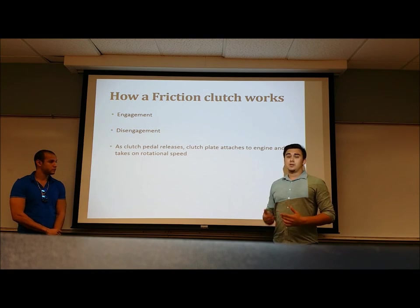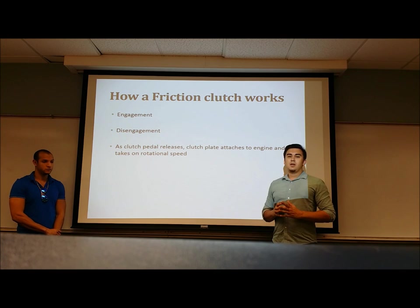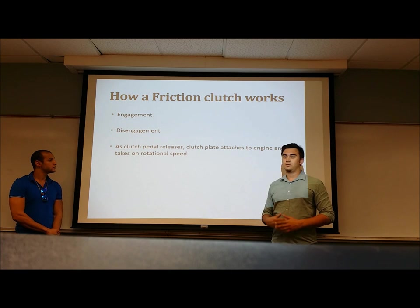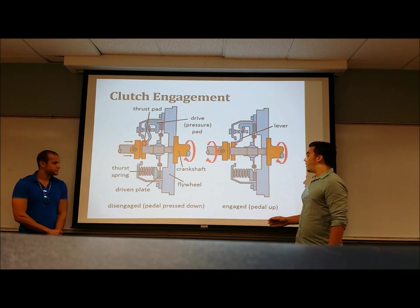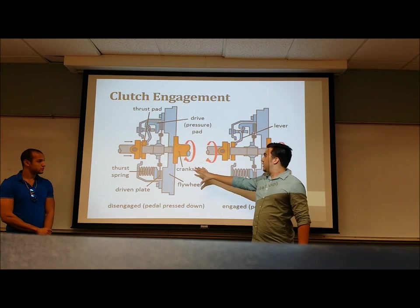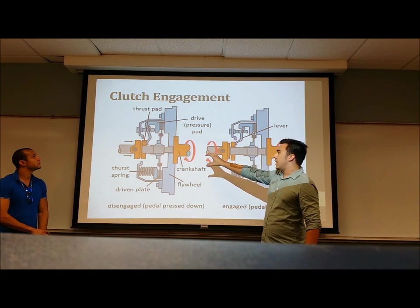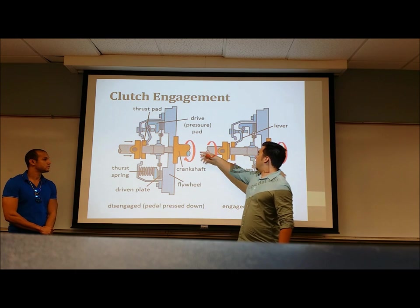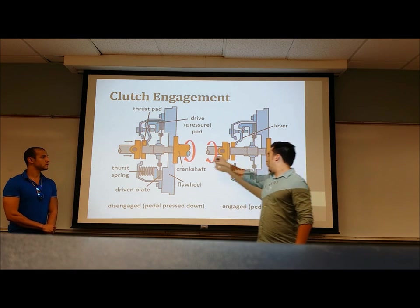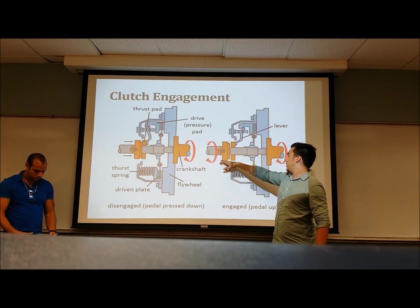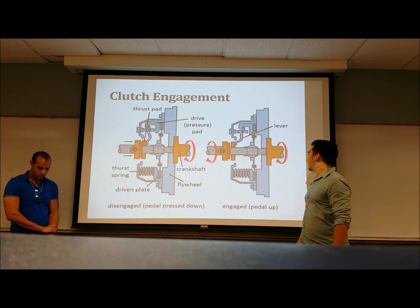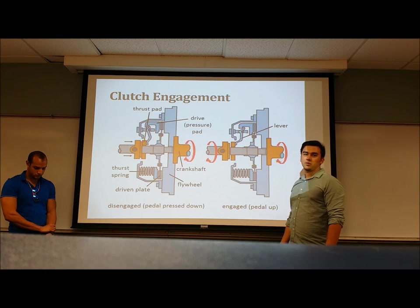Once that's done, the clutch pedal is then released, which allows the clutch to contact again, and that brings the speed of the transmission and the drive shaft up to the same speed as the engine. Here you can see a basic diagram of how it works. When the clutch is disengaged, you'll see that the force is acting in an axial direction and only the engine crankshaft turns, and once the clutch engages again, the drive shaft and the crankshaft rotate at the same speed due to the frictional force from the clutch.